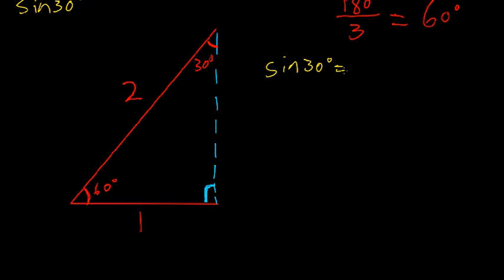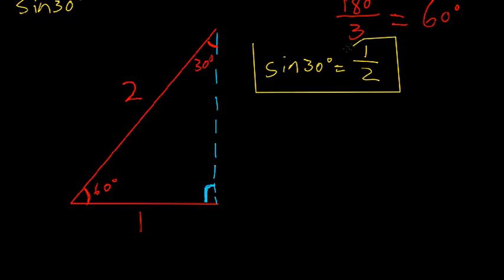Sine of 30 degrees is opposite over hypotenuse. The side opposite 30 degrees is 1, and the hypotenuse is 2. That's why it was a good idea to use 2 as the side length — it makes this side a nice whole number, since 1 is an integer. So sine of 30 degrees is one half. And we haven't even finished solving this triangle yet.